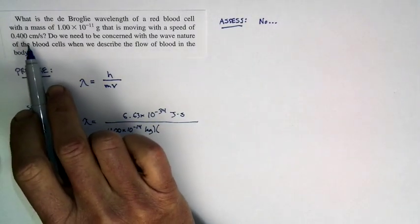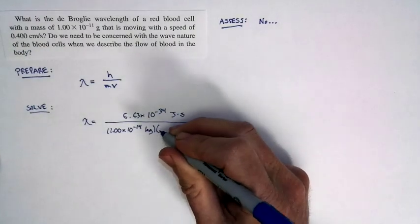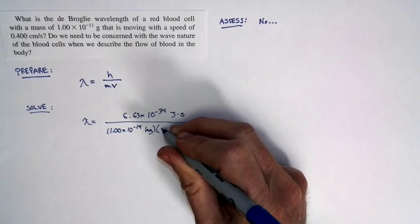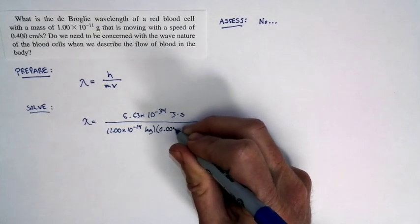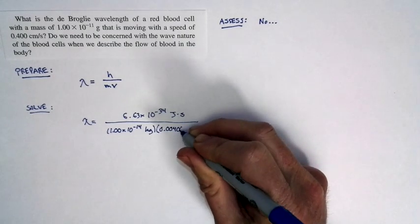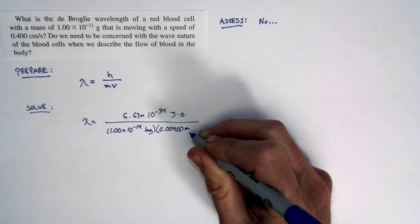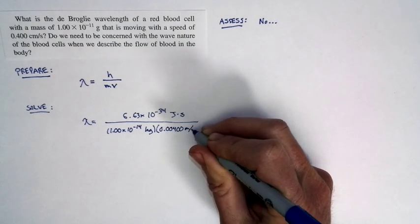The speed is 0.4 centimeters per second. But a centimeter is only one hundredth of a meter. So I'm going to divide by 100 to give my speed in meters per second: 0.00400 meters per second. That's my speed.